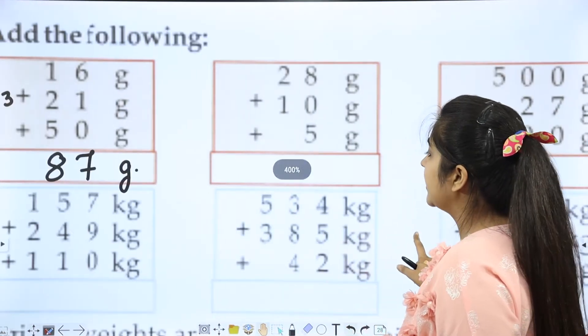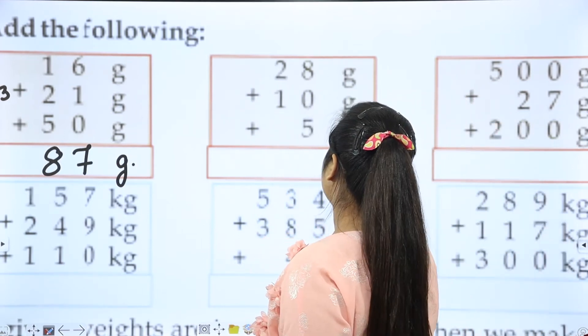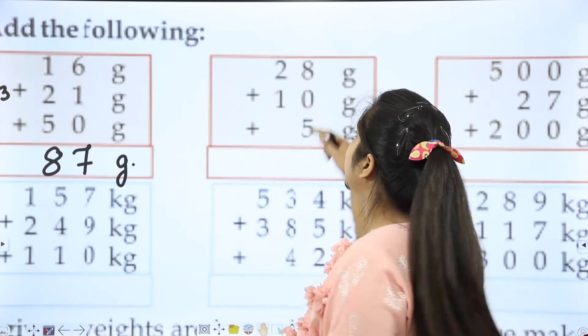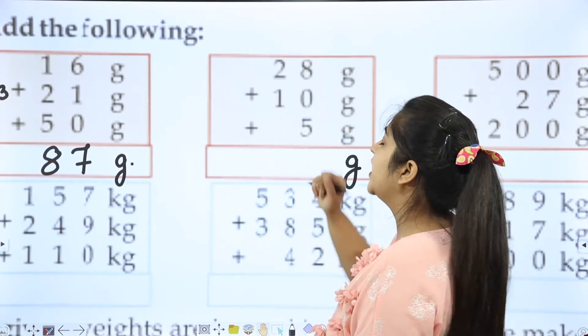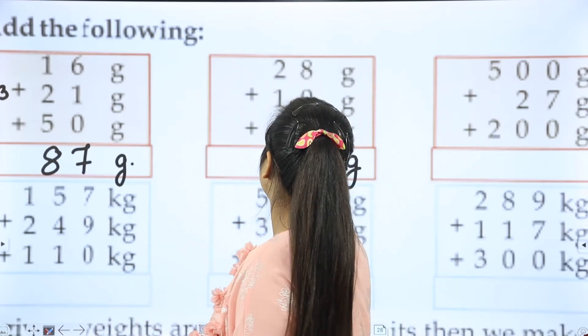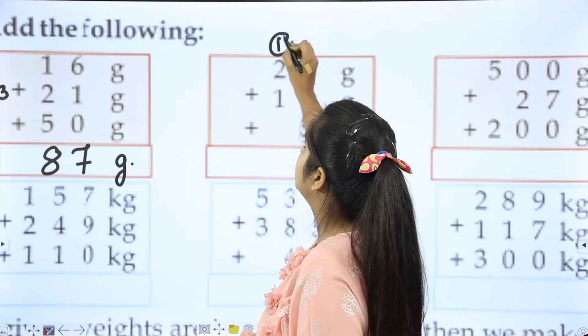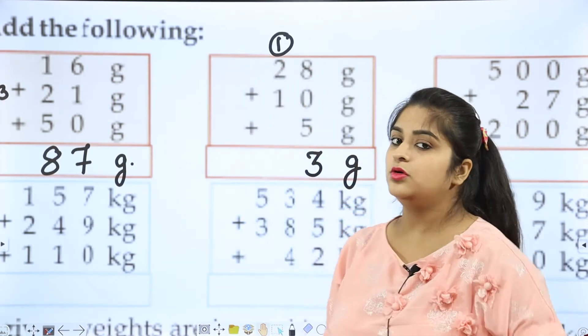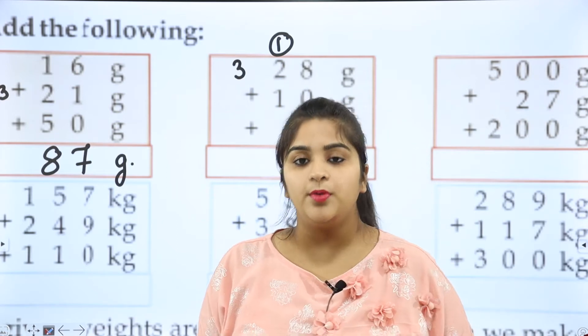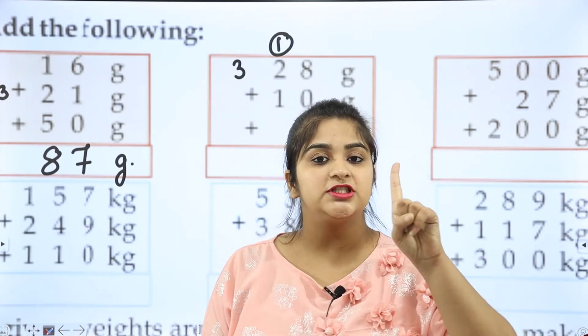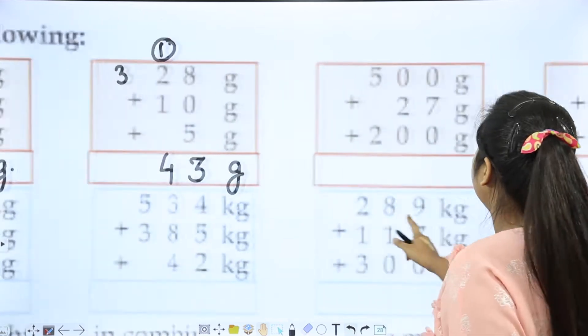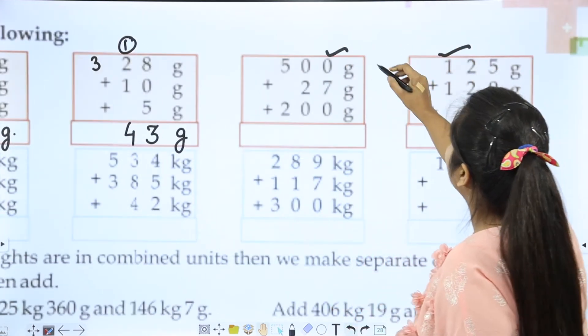About the next part, I'll do it here. We have grams. 8 in my pocket and 5 in my hand gives us 13, so write 3 and carry 1. 1 plus 2 is 3, 3 plus 1 is 4. So the answer is 43 grams. Take care. Same as this part and that part, you do as homework.